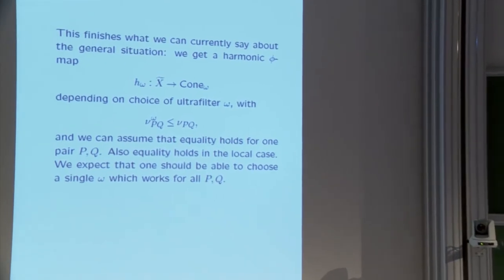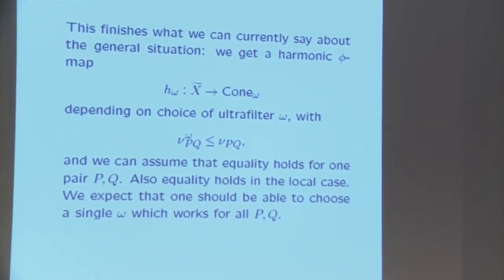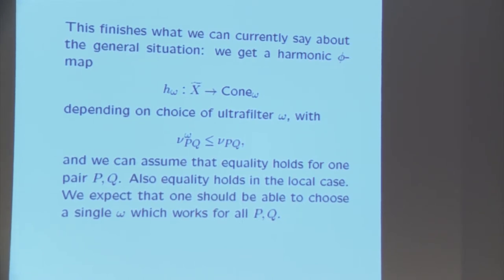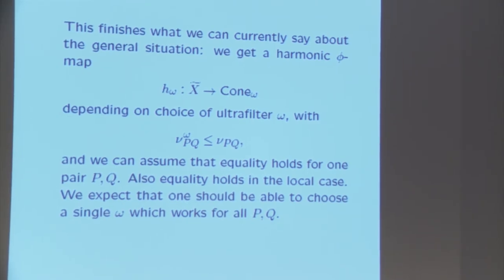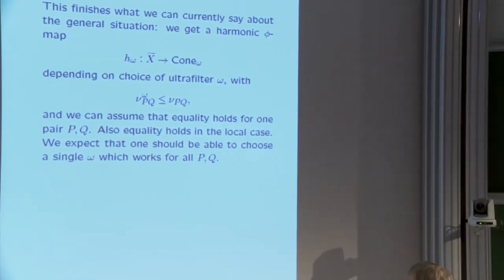So we get a harmonic phi-map H_ω, depending on the choice of ultrafilter. The Finsler distance you get from that map is ≤ the WKB exponent, and we can choose the ultrafilter so equality holds for at least one choice of P and Q. Equality also holds in the local case, when P and Q are close. We expect that one should be able to choose a single ω giving a building that works for all — or almost all — pairs P and Q, since the set of bad values of t should have small enough measure that they don't cover all choices simultaneously.